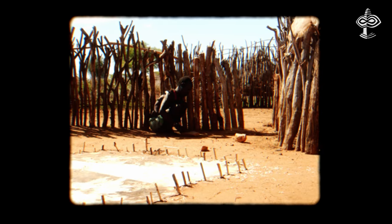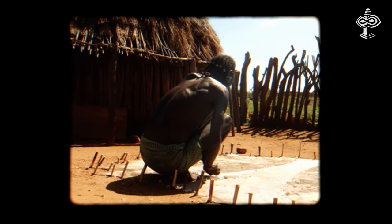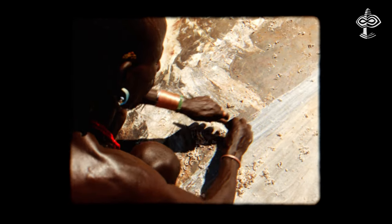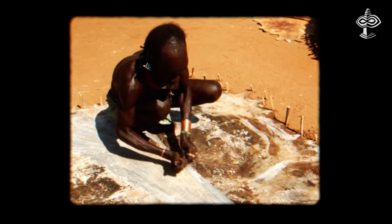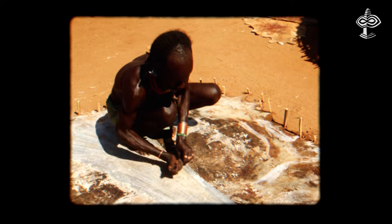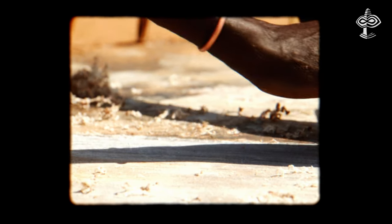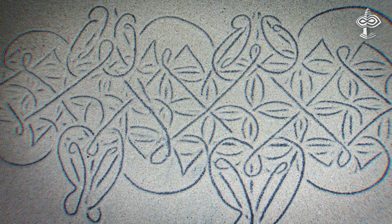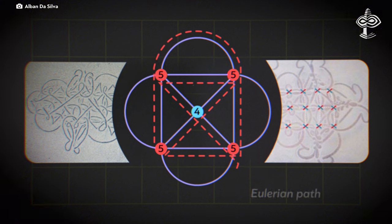Moreover, in-depth research into traditional drawings of various ancient indigenous societies revealed that they can be modeled as the result of algorithms and operations of an algebraic nature. For example, sand drawings of the Vanuatu societies, a very ancient form of art, were found to be using principles of graph theories.